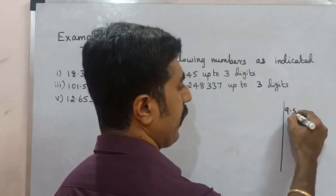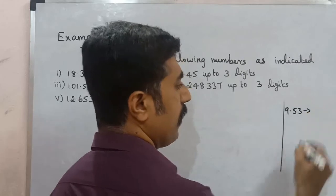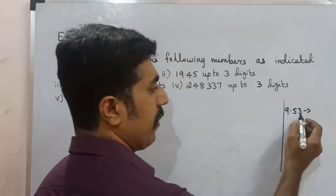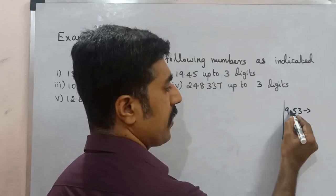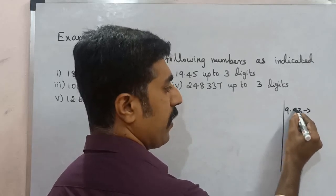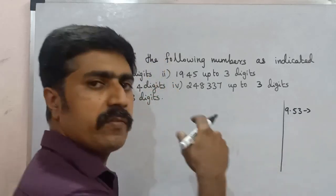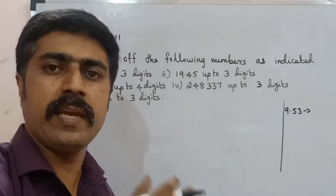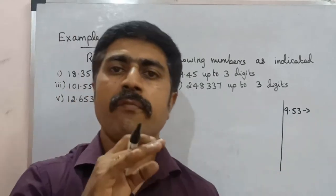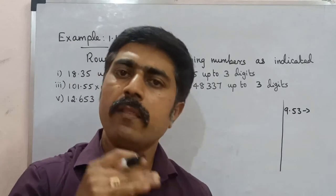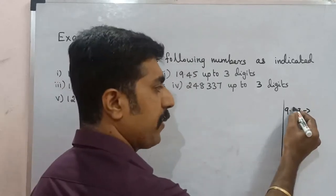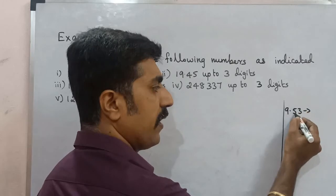Take 9.53 — this is a 2-digit round off. Including the decimal point: 1, 2 — so we are going to drop the last digit. Why drop? This digit 5 is equal to or above 5, so we add 1, making it 3 digits. How do you change the digit? Let's see.